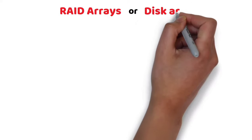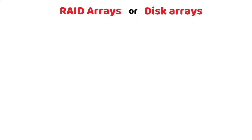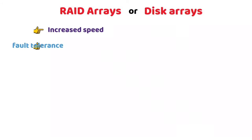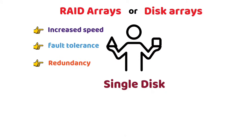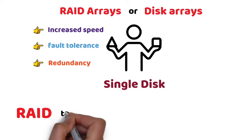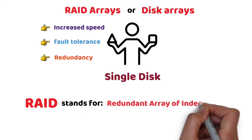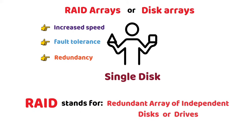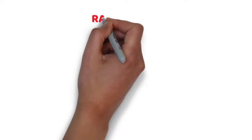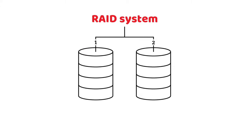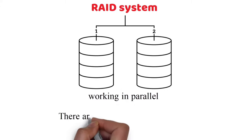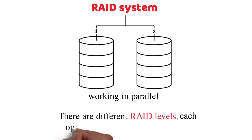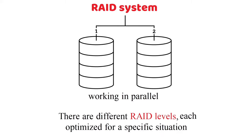RAID arrays, or disk arrays, are used so that you have increased speed, fault tolerance, and redundancy when compared to one single disk. RAID stands for Redundant Array of Independent Disks or Drives. A RAID system consists of two or more drives working in parallel. There are different RAID levels, each optimized for a specific situation.